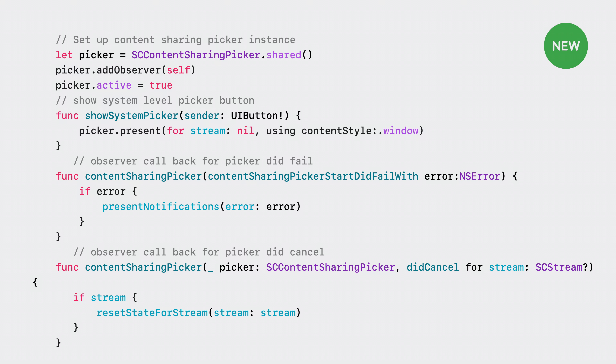The remaining observer callbacks are equally important. Set up the picker again by making it active and presenting it. You'll also want to know if the picker failed when you asked to present it. If it did fail, you'll want to post a notification in your application to notify people. Also, if the picker was presented but canceled — meaning no content was picked — you want to make sure you set the state for your stream accordingly.